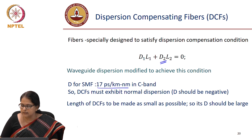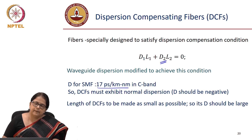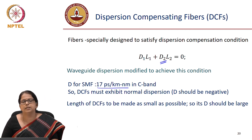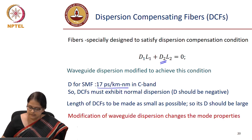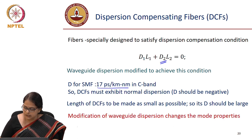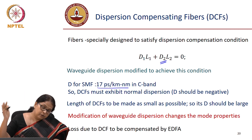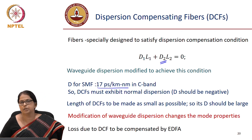Another reason to keep the DCF short is that modifying waveguide dispersion requires altering the core diameter and other waveguide parameters, which can increase fiber loss. We do not want a very long length of DCF. The loss of the DCF can be compensated by an EDFA, so in your link design you should account for the loss introduced by the dispersion compensating fiber.